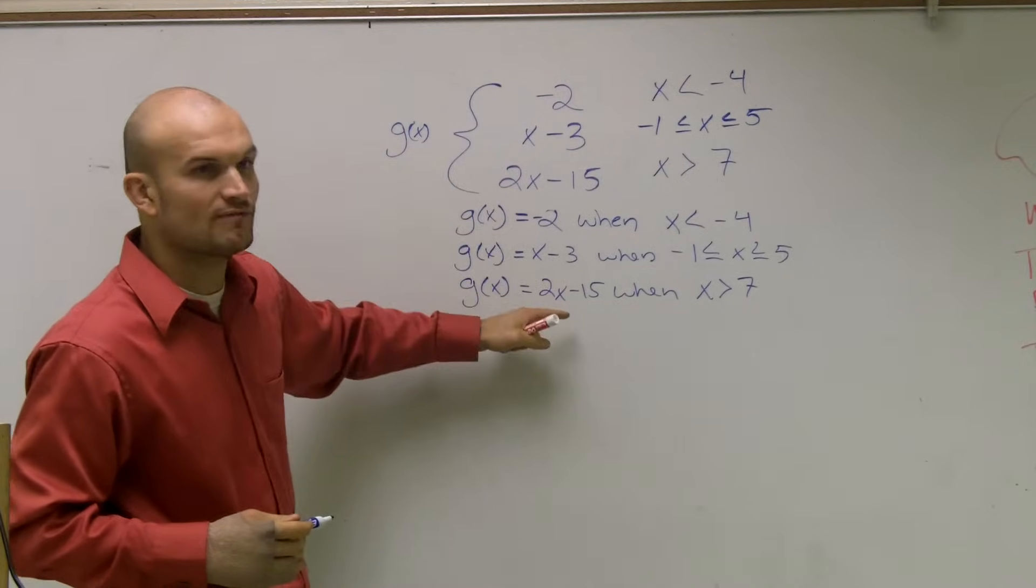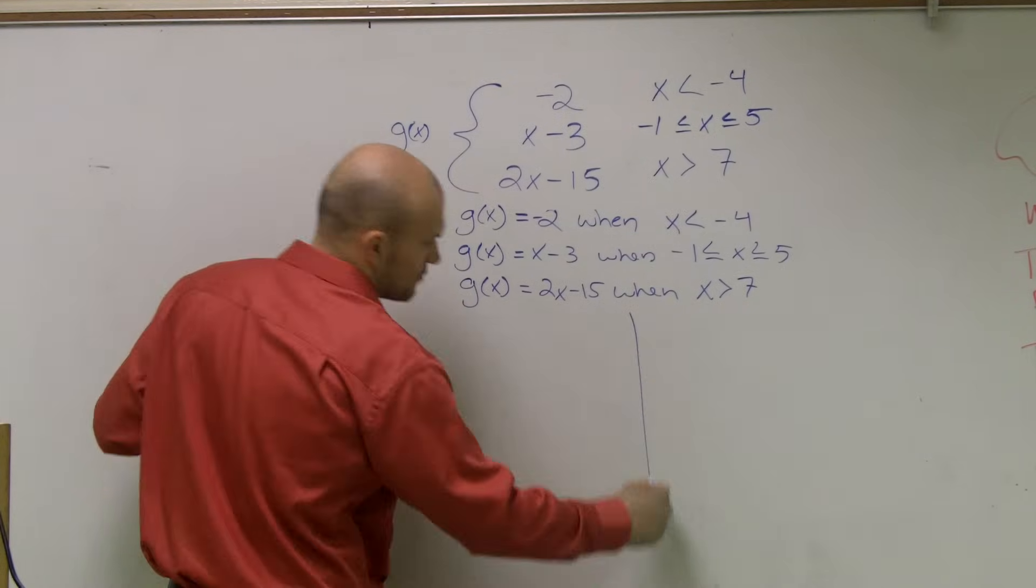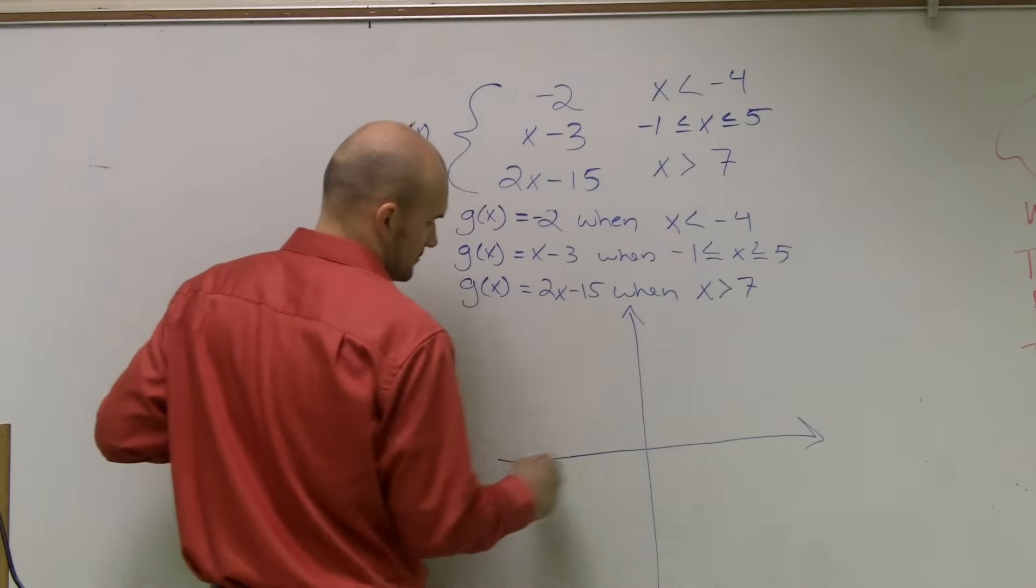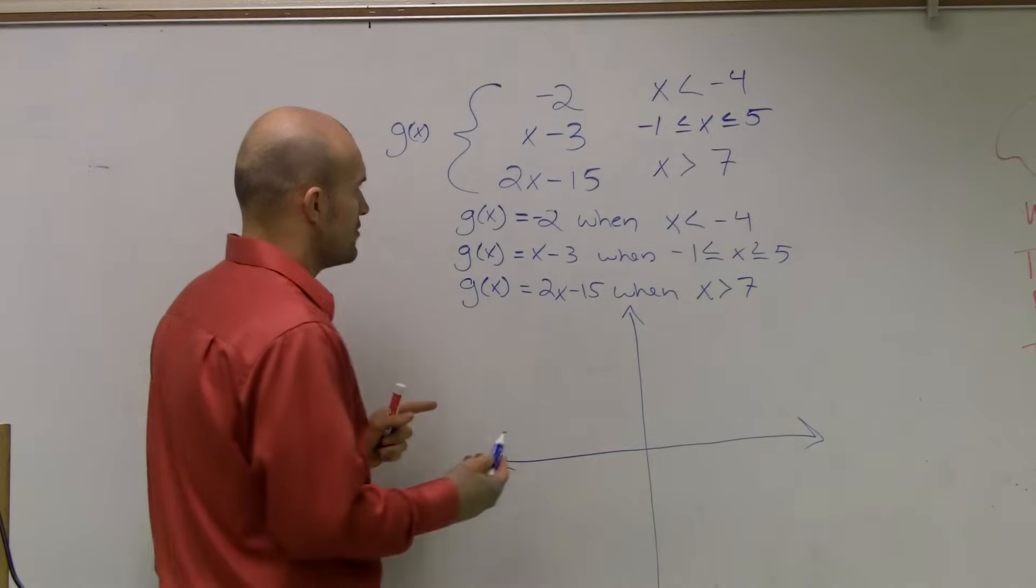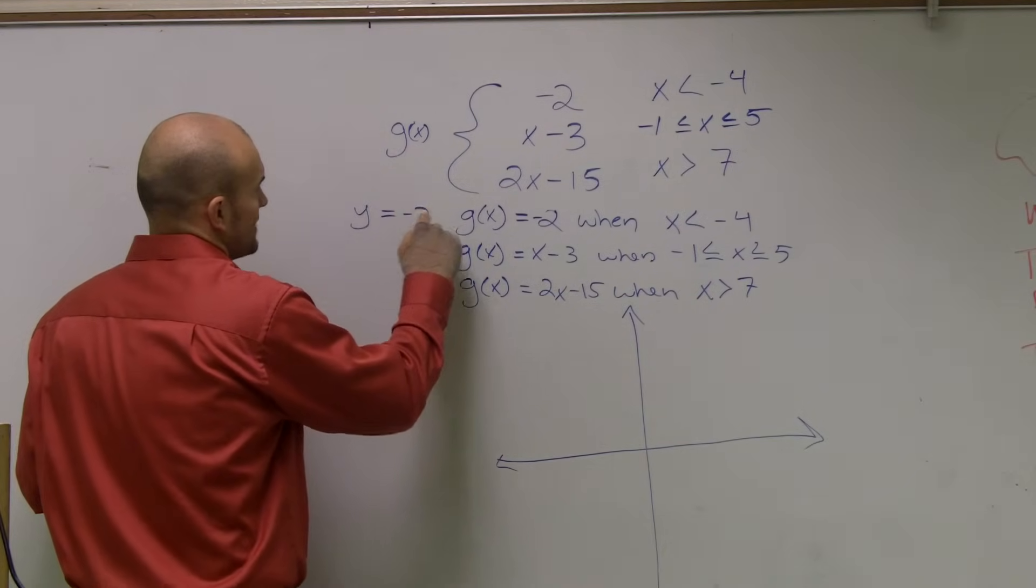These are all individual functions that we need to graph. So what I'm going to do is I'm going to have to graph each one of these separately according to their constraints. So if I need to graph negative 2, remember, think of that as like a y and an x. y equals negative 2.